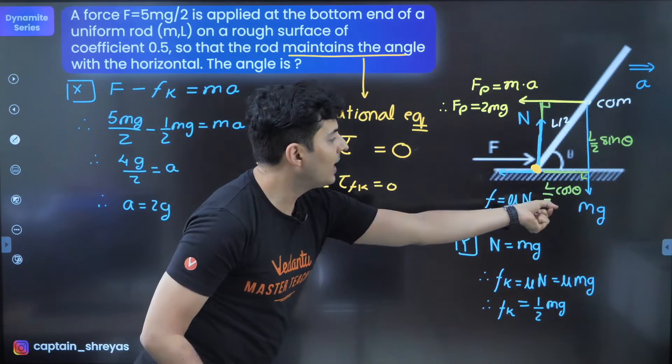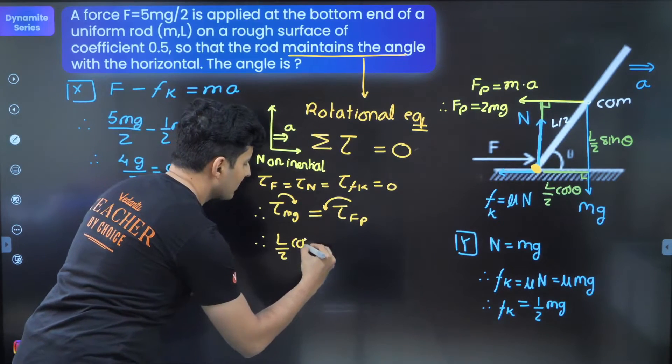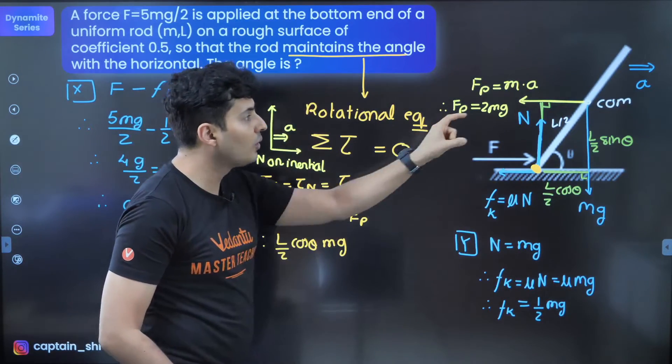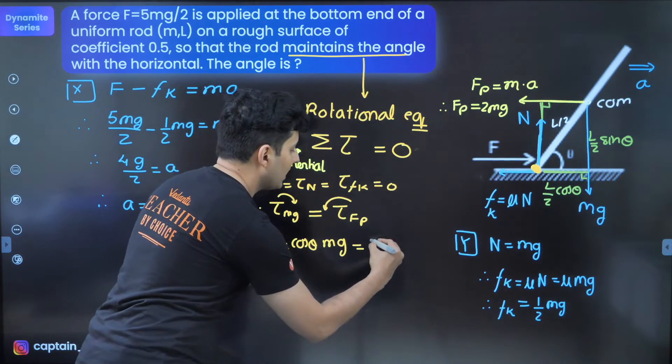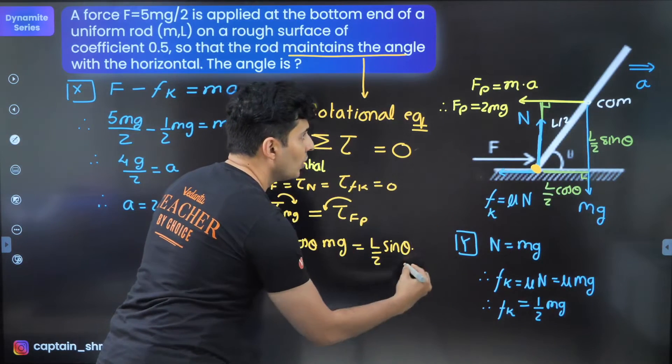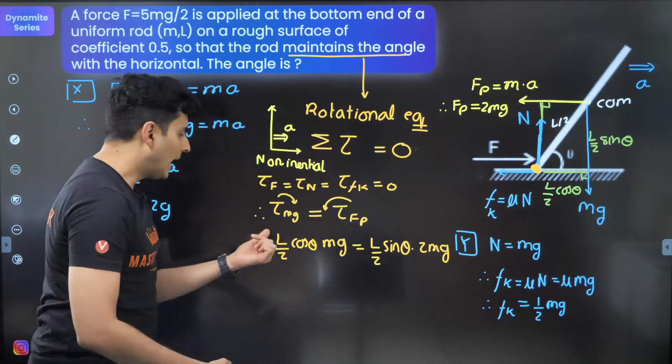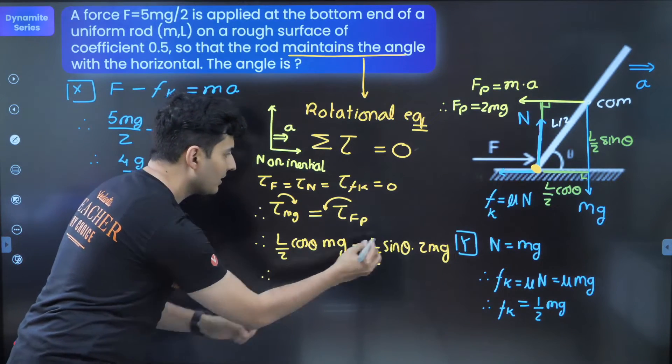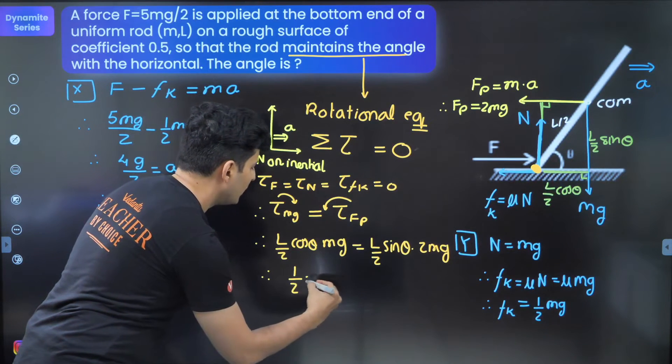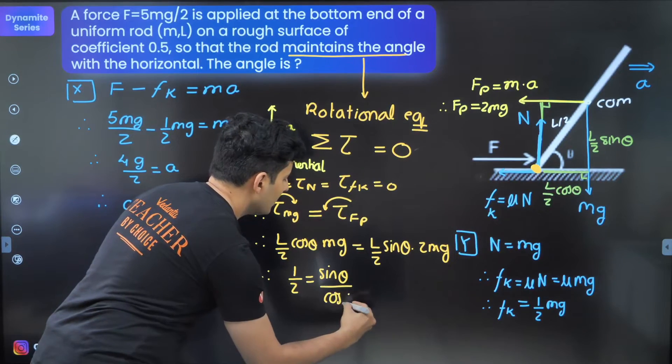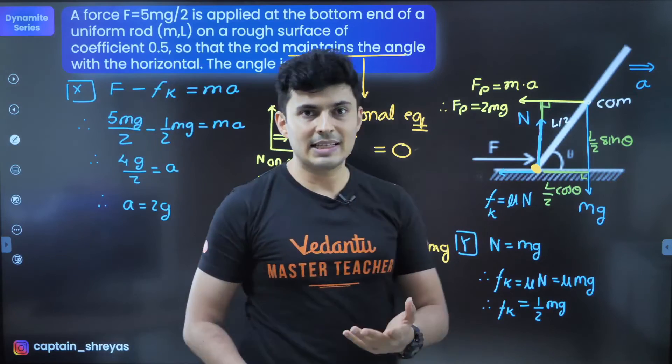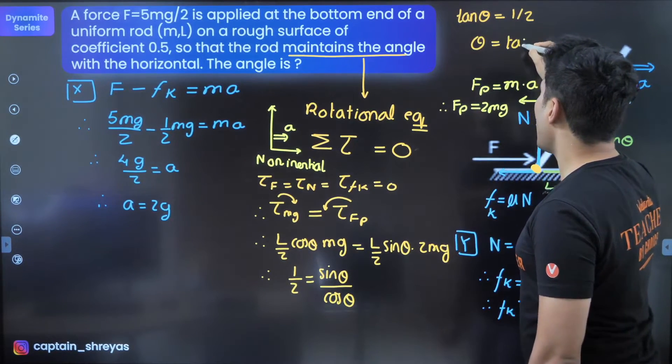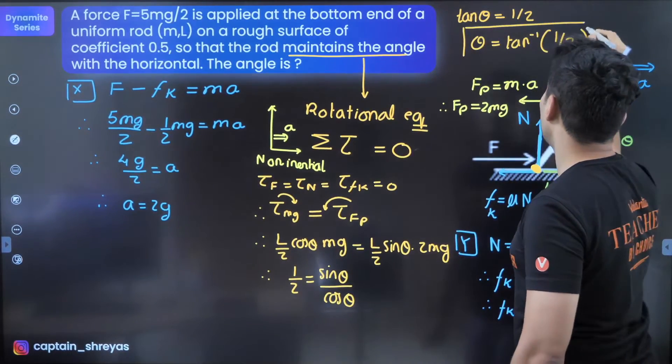The torque of gravity will be L by 2 cos theta into Mg. The torque of the pseudo force will be this distance into the force, which is L by 2 sin theta into 2Mg. L by 2 cancels, Mg cancels. Sin theta is here, cos theta is here. Bring the cos theta down and bring the 2 on the other side. You will get 1 by 2 equals sin theta by cos theta. What is sin by cos? Obviously, it is tan of theta. I will get tan theta equals half. That means theta equals tan inverse of half. And that is our final result.